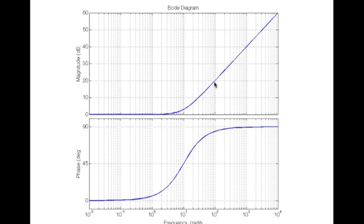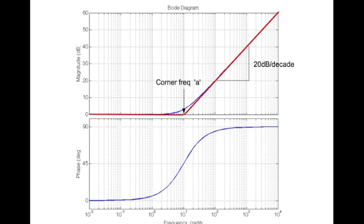This is the magnitude plot and this is the phase plot. You can draw asymptotes: the asymptotic magnitude plot remains zero until it hits the corner frequency 'a', and then it climbs up at 20 decibels per decade. What is 20 decibels per decade? A decade is a power of 10. So here, 10 to the power of 2 is 100; a power of 10 away is 10 to the power of 3, which is 1000. And if you notice, the magnitude here is 20 decibels and there it is 40 decibels — therefore it is 20 decibels per decade.